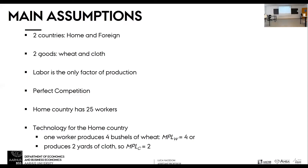Labor is the only factor of production. The technology for the home country is represented by the marginal product of labor. The marginal product of labor in the wheat sector is four — so one worker can produce four units of wheat. That same worker can also produce two units of cloth.